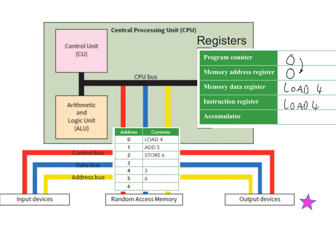Now we're on to the execute part. The CPU knows what it's doing — it sends a signal along the address bus to get to address four, where number three is stored. It transfers number three along the data bus and puts it into the accumulator. So the whole process has fetched number three, decoded it, worked out what to do, and executed the instruction — popping that number three from memory location four into the CPU ready for it to do something.